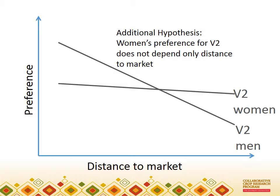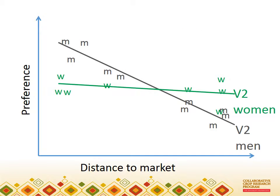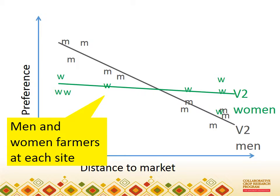Now let's add a second hypothesis. It states that men and women's preferences for V2 are not the same, and that women's preference is less affected by distance to market, perhaps because of women's focus on production for home consumption. Investigating that hypothesis requires that we have preferences of both men and women at each site. Gender of the farmer is an example of a context factor that is not determined by site — you can't usually point to a place on a map and say what the gender of farmers there will be, unlike distance to market.